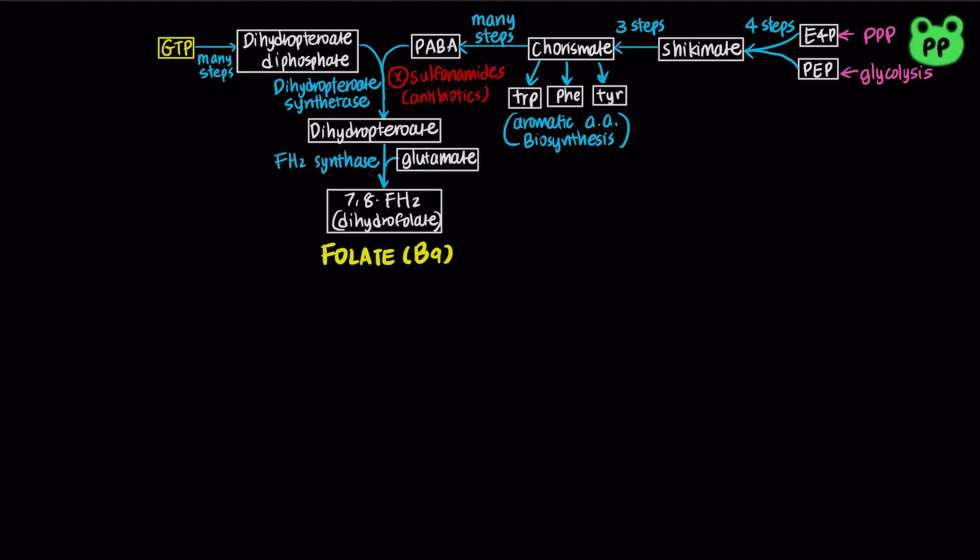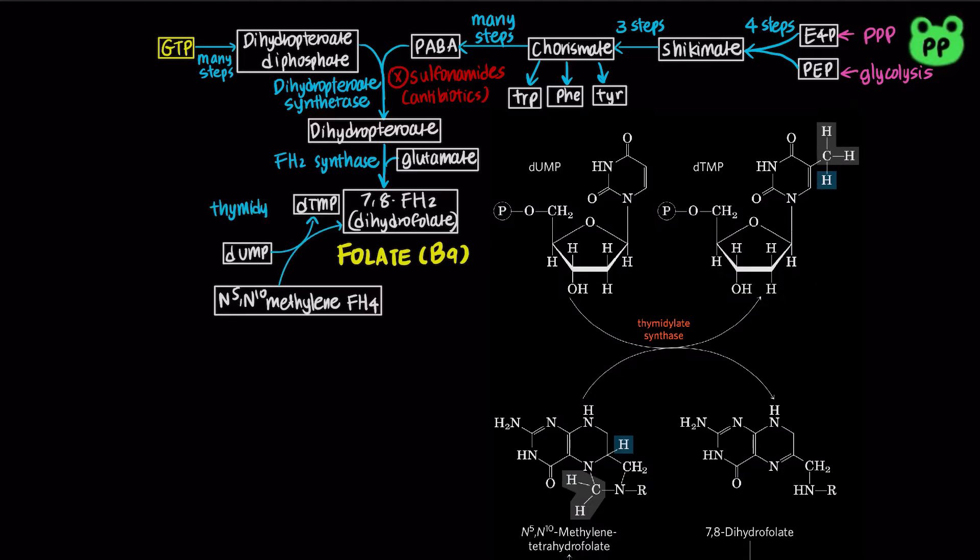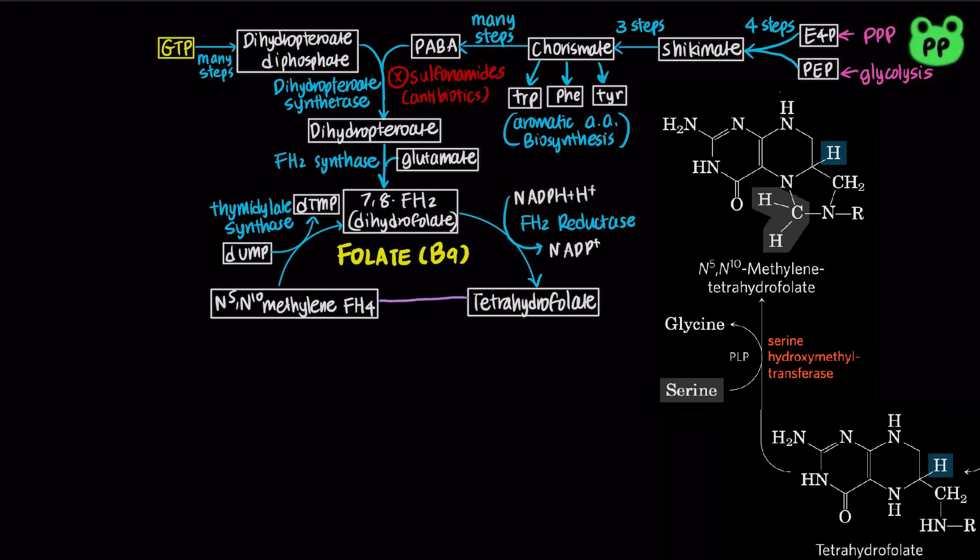Different forms of folates are interconvertible and serve as donors of one-carbon units in a variety of metabolic reactions. As I cover in my video on nucleotide biosynthesis, deoxyUMP can be converted to deoxyTMP by the enzyme thymidylate synthase, with N5,N10-methylene tetrahydrofolate serving as the methyl donor, producing 7,8-dihydrofolate, which is subsequently reduced to tetrahydrofolate by dihydrofolate reductase, coupling to the oxidation of NADPH to NADP+. Serine hydroxymethyltransferase then converts tetrahydrofolate to N5,N10-methylene tetrahydrofolate, with serine as the methyl donor, producing glycine.